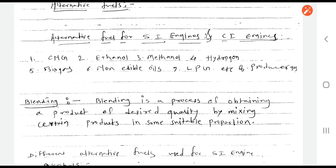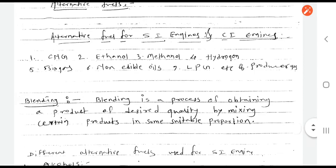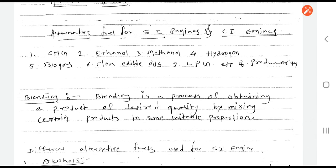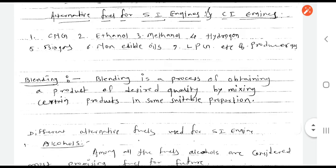There are different alternative fuels like compressed natural gas, ethanol, methanol, hydrogen, biogas, non-edible oils, LPG, producer gas, etc. We will understand one by one which are the alternative fuels for SI engines and which are for CI engines.